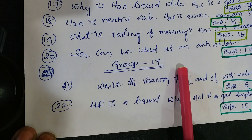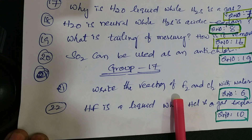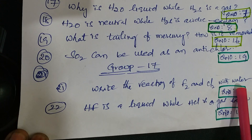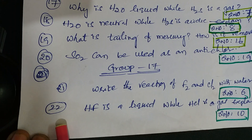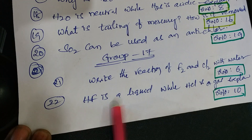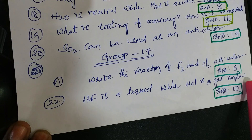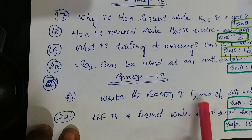Next lesson is 17th group elements. Write the reaction of F₂ and Cl₂ with water - that is question number 6 from material. Next question: HF is a liquid while HCl is a gas - explain. That is question number 10 from material.